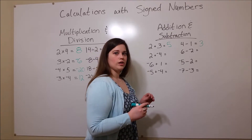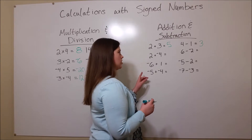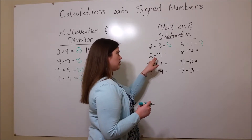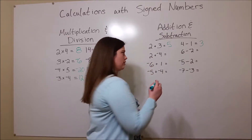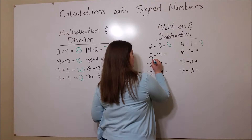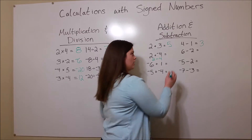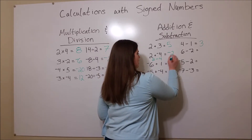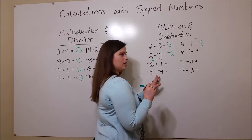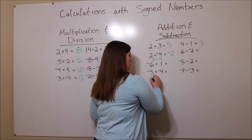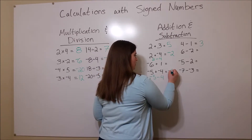It gets a little bit more complicated when one of those numbers is negative. However, what you can do whenever you have a situation like 2 plus a negative 4 is rewrite it as 2 minus 4. 2 minus 4 is the same as 2 plus a negative 4, and the answer is negative 2. We see the same thing with negative 5 plus a negative 4 — you can rewrite this as negative 5 minus 4, which equals negative 9.